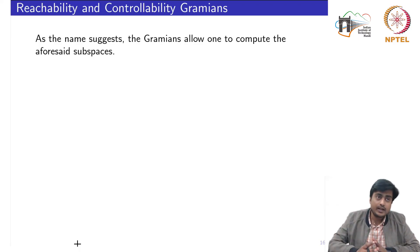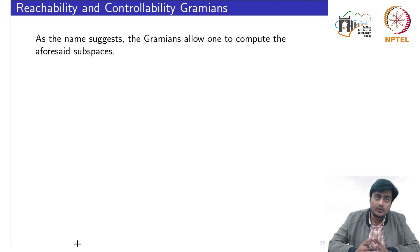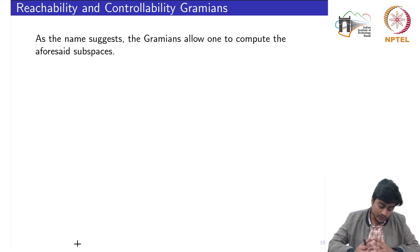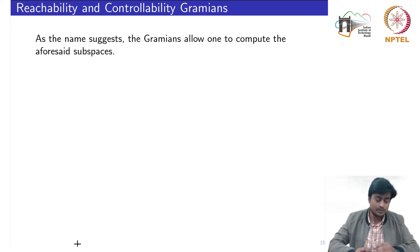Next, we consider the reachability and controllability Gramians. As the name suggests, the Gramians allow one to compute the four fundamental subspaces. We are now clear about the two subspaces for studying controllability and reachability, and we want to compute those subspaces using the Gramians. In a previous example with parallel interconnection of systems, we saw a glimpse of computing the subspace; now we will uniformly define how to use Gramians to compute those subspaces.